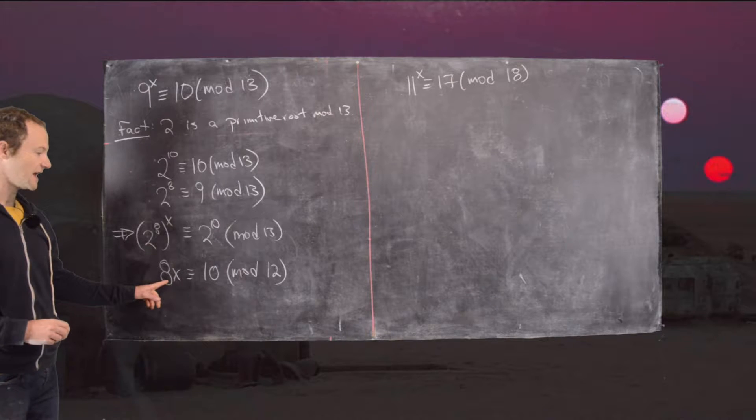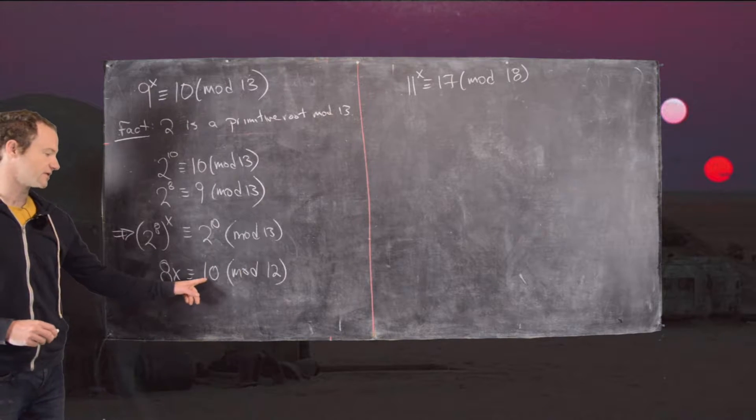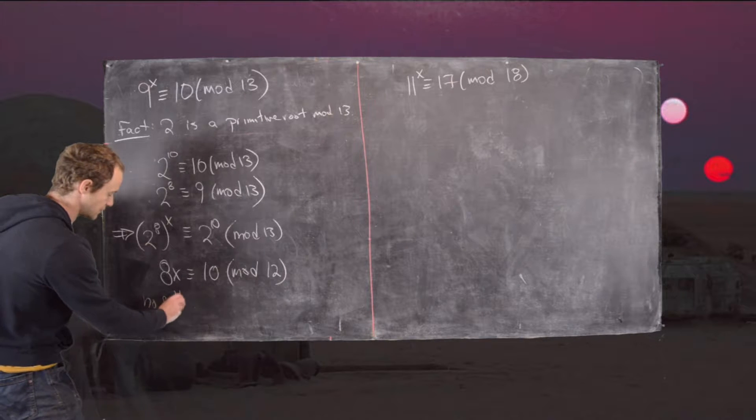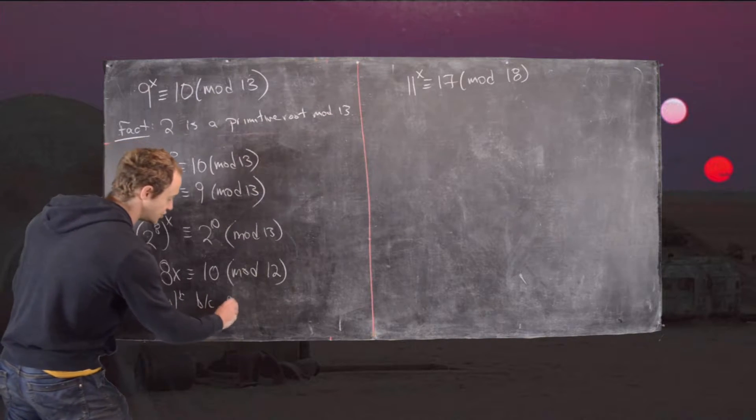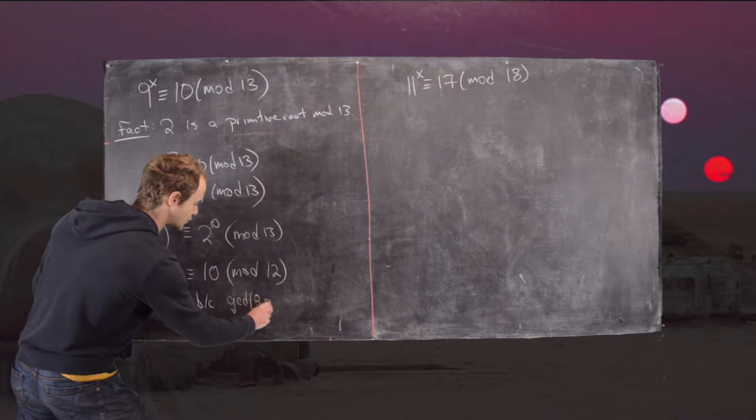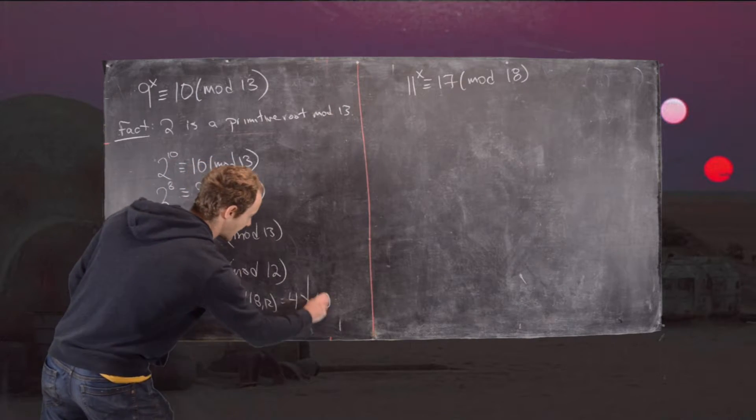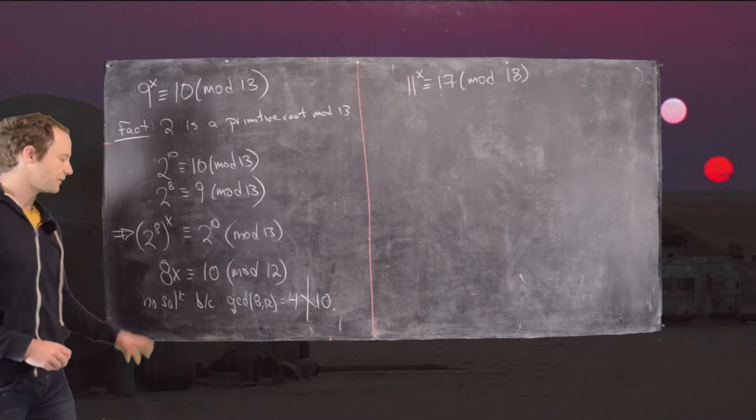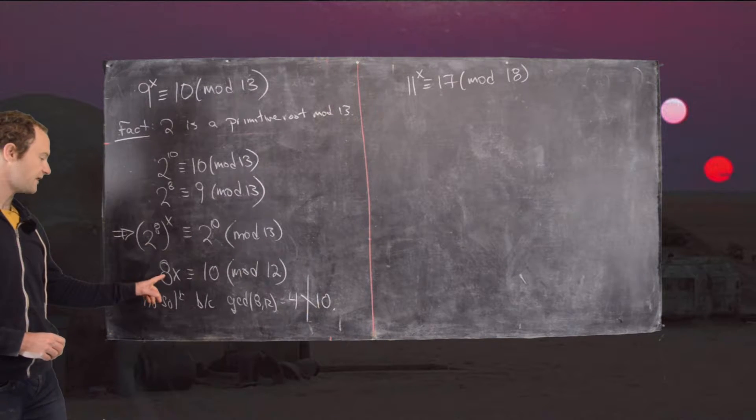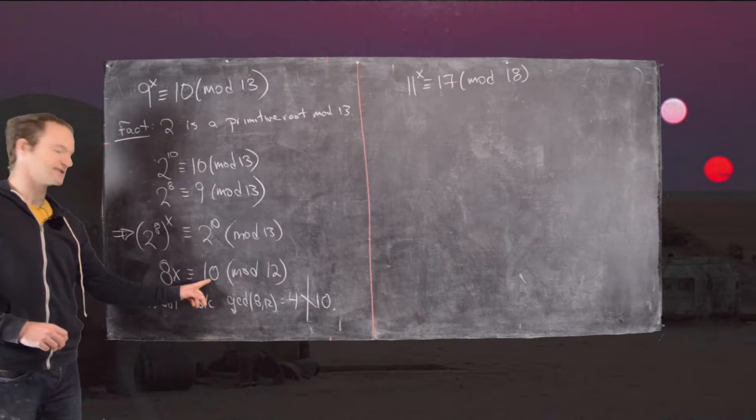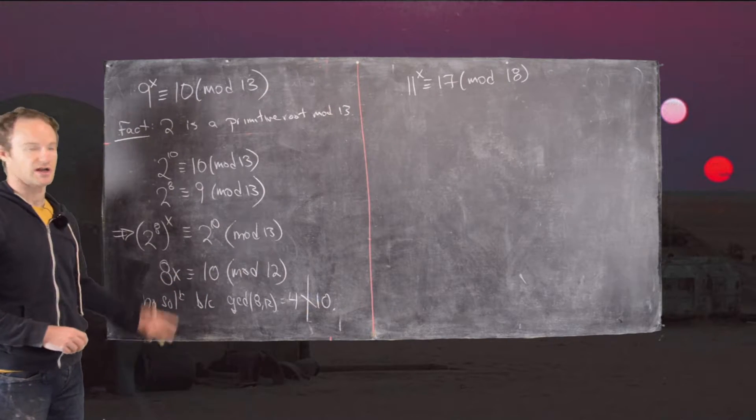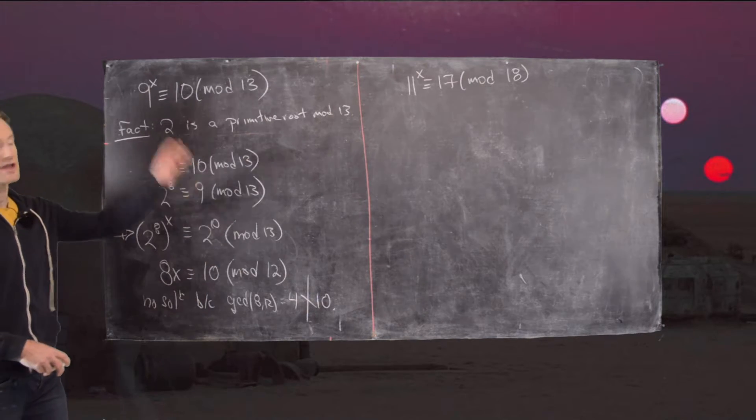Now we have 8x is congruent to 10 mod 12, but notice this has no solution. That's because the GCD of 8 and 12 equals 4, which does not divide 10. If the GCD of this number and this number divides this number, that's a precise way of deciding whether or not this has a solution. In this case we don't have a solution.